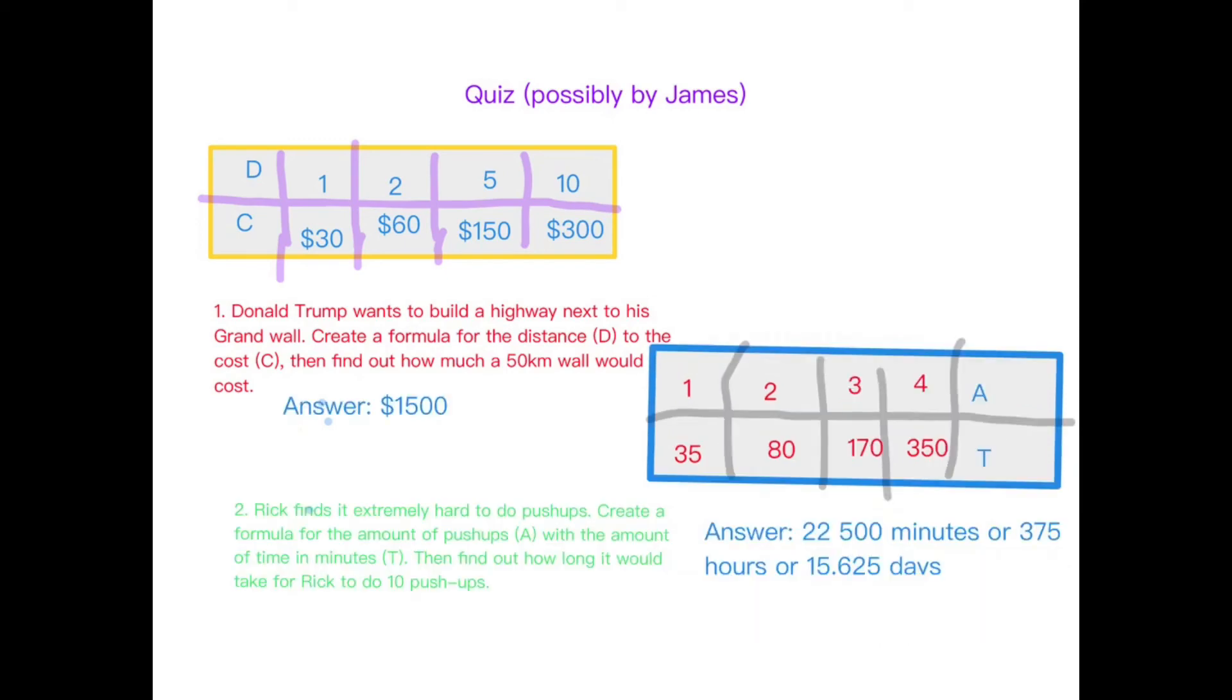The answer to question one is $1,500. Donald Trump's highway costs $1,500. And now the answer to number two: it takes Rick 2,500 minutes or 375 hours or 15.625 days.